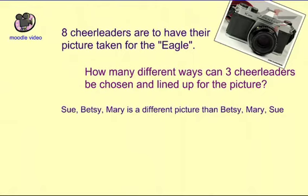The reason why this falls under permutation is because Sue, Betsy, then Mary is a different picture than Betsy, Mary, and Sue — even though it's the same three people in the picture. So the order matters. This is a permutation.